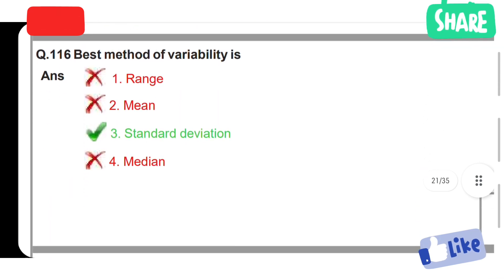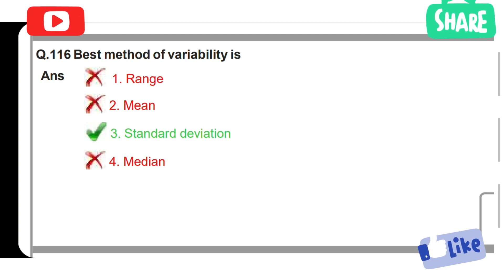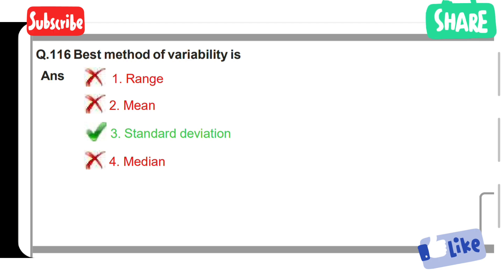The best method of variability is: Option 1: Range. Option 2: Mean. Option 3: Standard deviation. Option 4: Median. Option 3 is the correct answer. Standard deviation is the best method of variability.